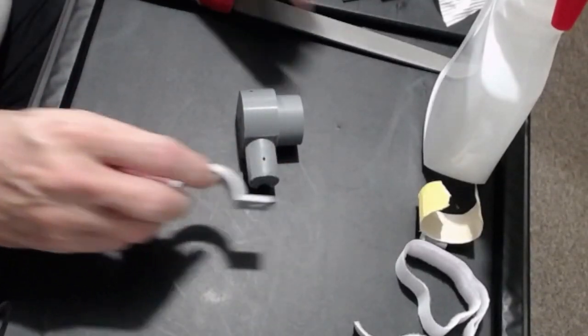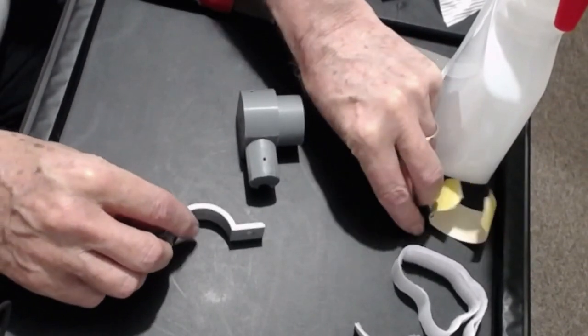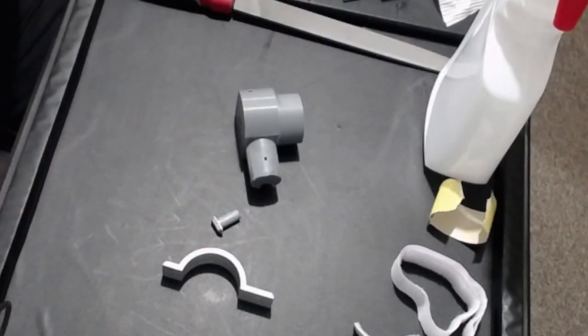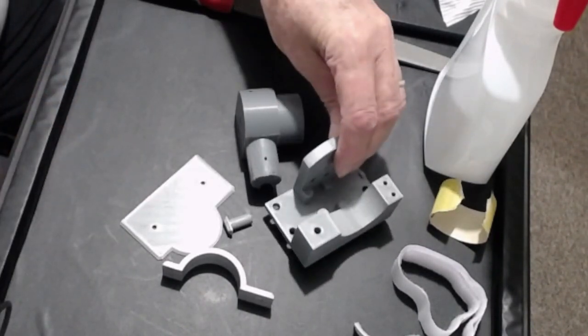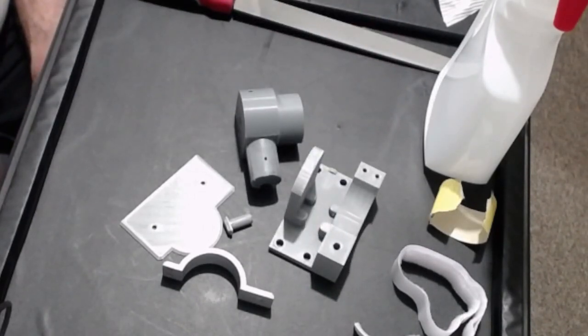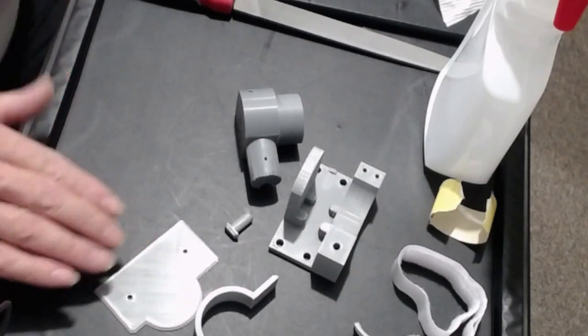This is the starting point. Obviously you need to have had all your components printed at 0.2 resolution, preferably with three perimeters. Just start with the preliminary steps to assemble this.